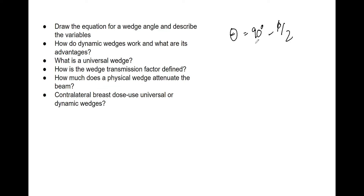Dynamic wedges create wedged beam profiles through the dynamic motion of the jaw within the treatment beam. There is no beam hardening and it really reduces the scatter outside the field — those are its advantages. You need to do QA on them on a monthly basis to verify dose, and the jaw in your machine moves to replicate the wedge angle.